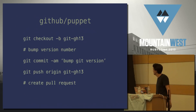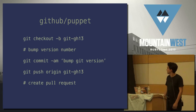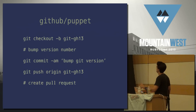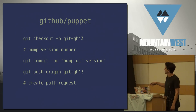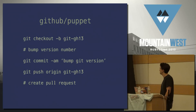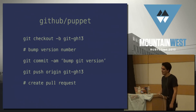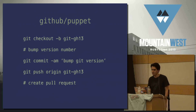We have a GitHub repo for our Puppet repository. We check out a branch, make the change to the version number of the package, make a commit, then push that up to GitHub and create a pull request.